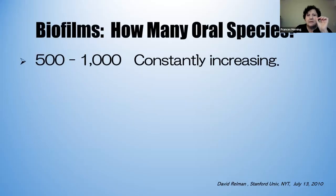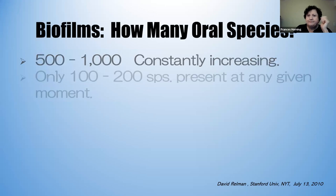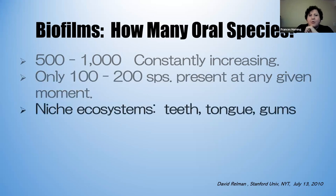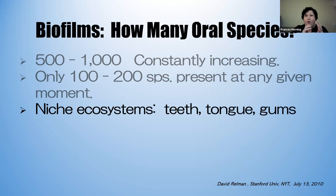How many oral species are there? About 500 to 1,000, constantly increasing. In the mouth, there are only about 100 to 200 present at any moment. You can have something on the mesial of a tooth and a different species on the distal. What you have on the upper left can be totally different from the lower right, and everything can certainly move around.